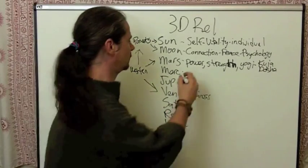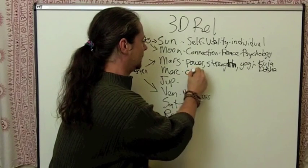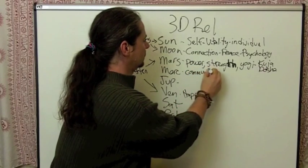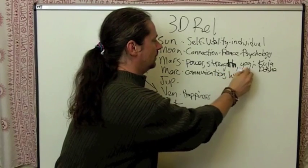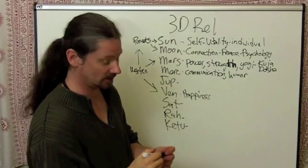Mercury in relationships, of course, he's the communicator and it's big. Communication, humor. This is a really important quality in relationships.